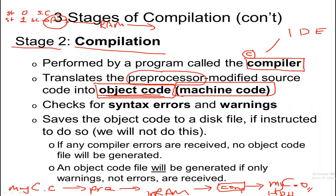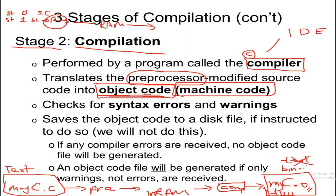Remember, myc.c could be opened in Notepad because it is a text format. But this object code is not text anymore — it is binary. Binary means that only zeros and ones are the elements in that format. You cannot open it and read it as text. That is what compilation produces.